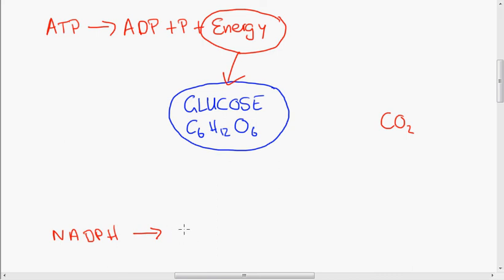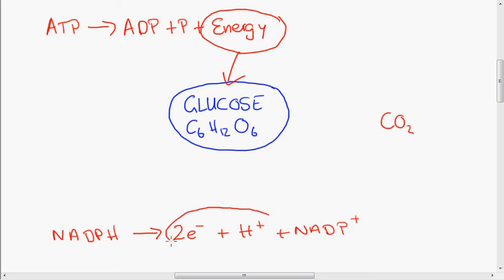What is the fate of NADPH? In the light stage, NADPH was composed of two electrons, a hydrogen ion, and NADP⁺. The function of NADPH is to store and transfer hydrogen ions and electrons. It is made from these components during the light stage, stores the electrons and hydrogen ions, transfers them to the dark stage, breaks down, and then the hydrogen ions and electrons are used to make glucose.